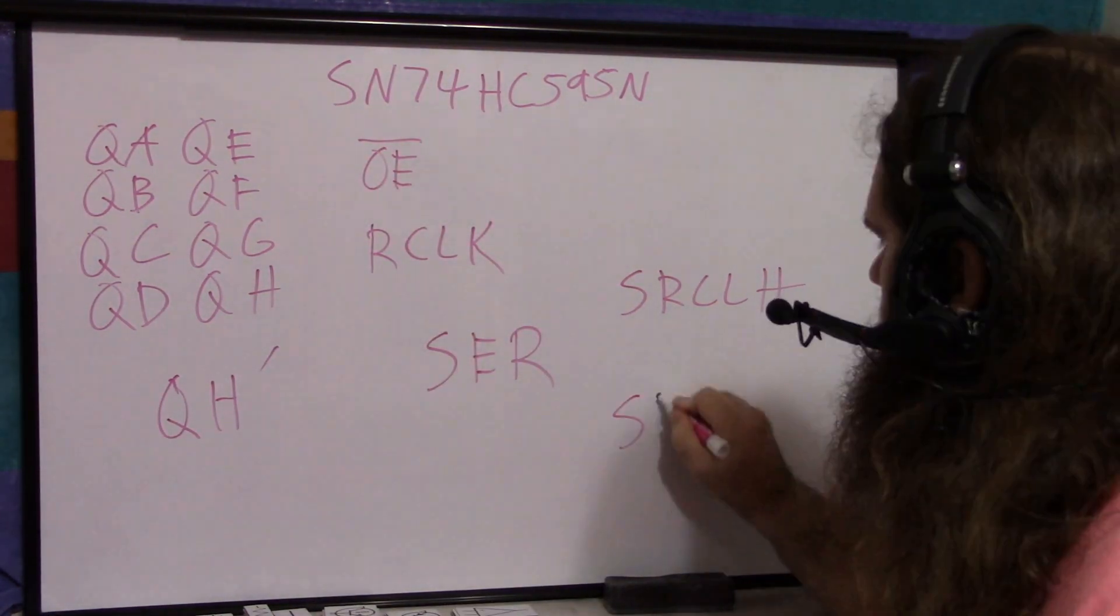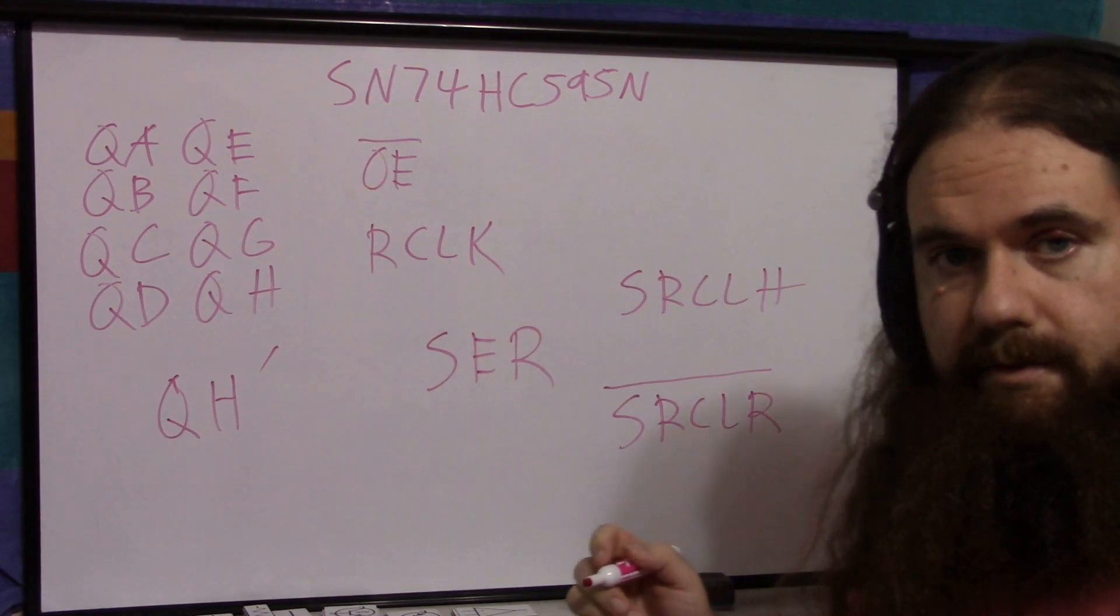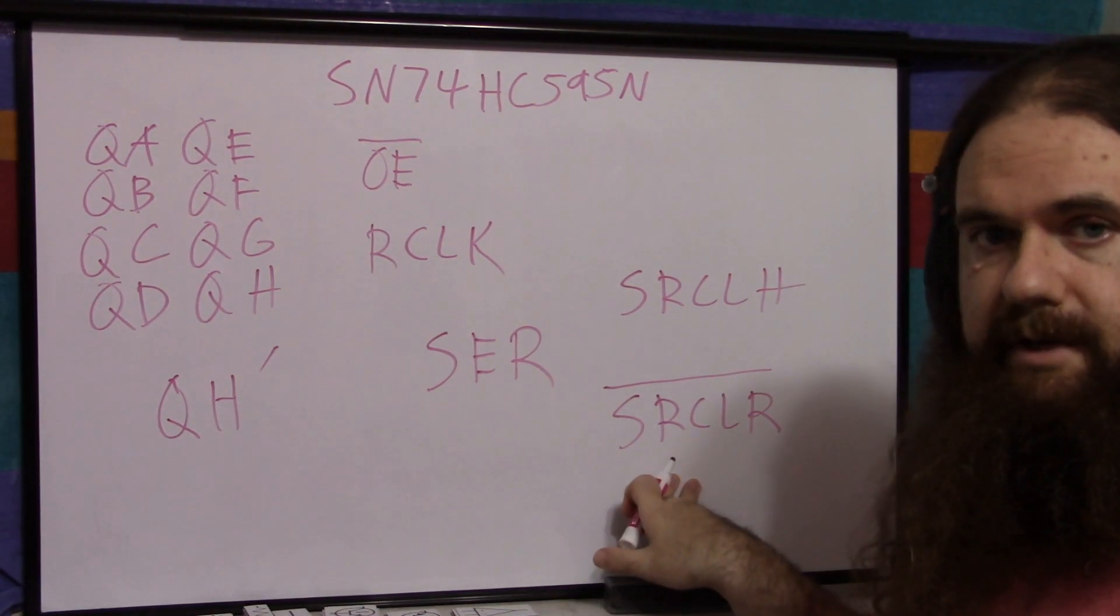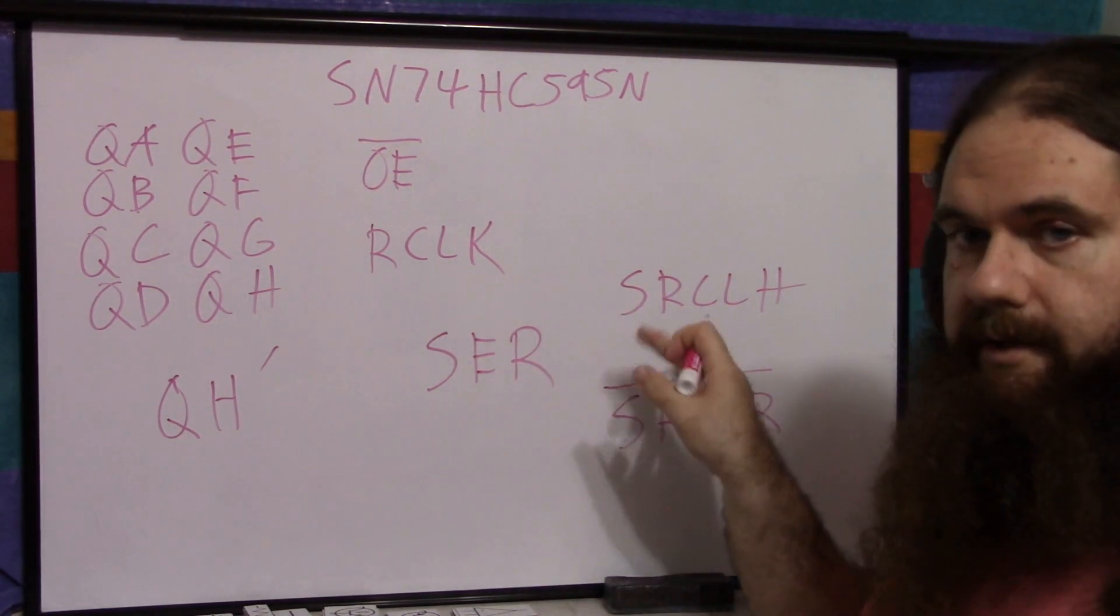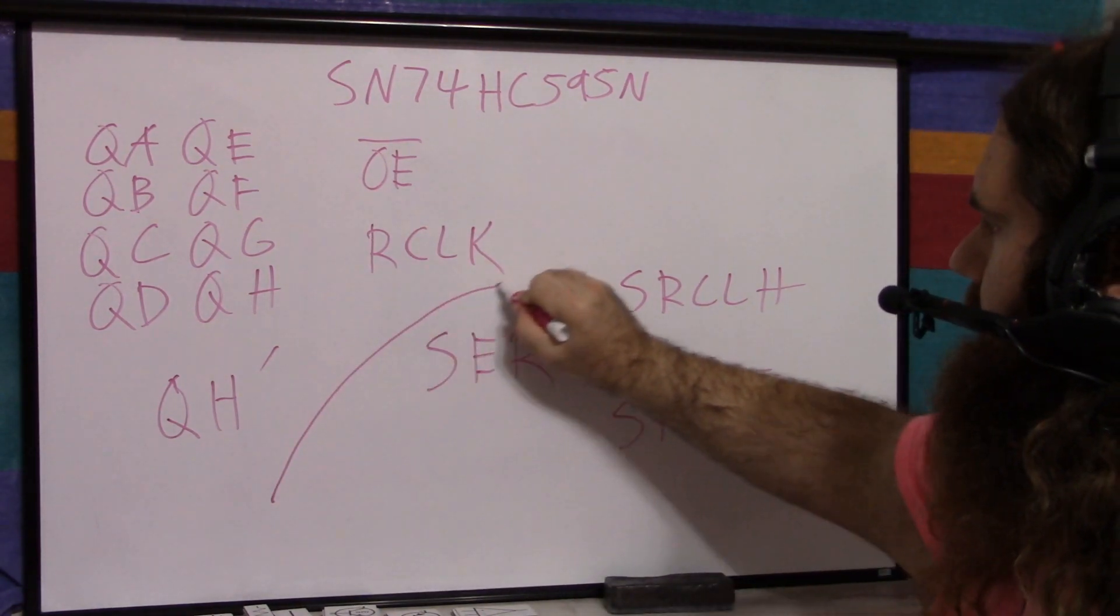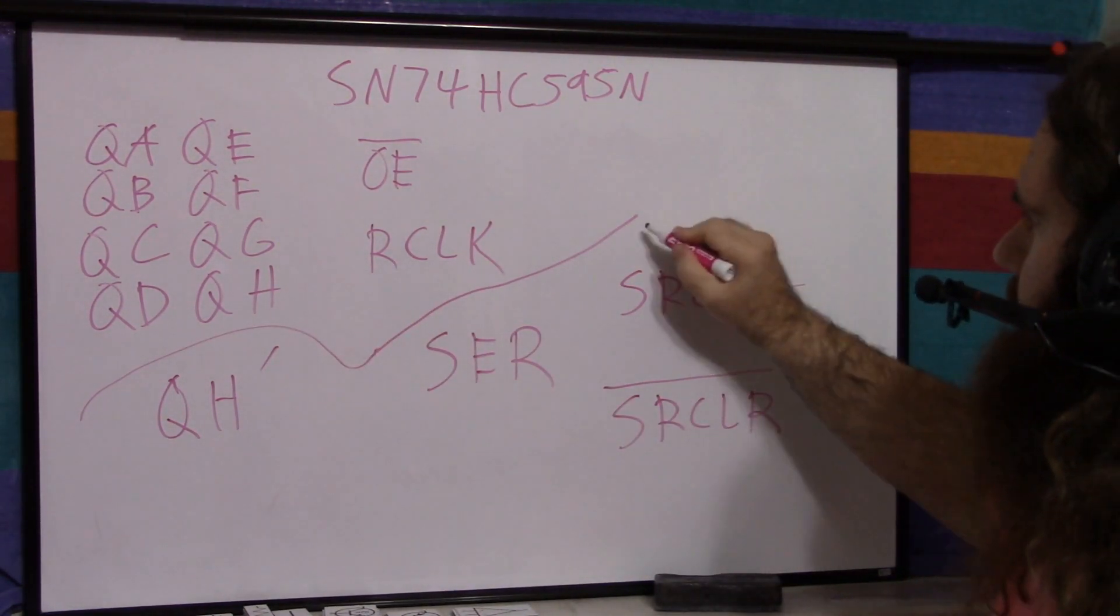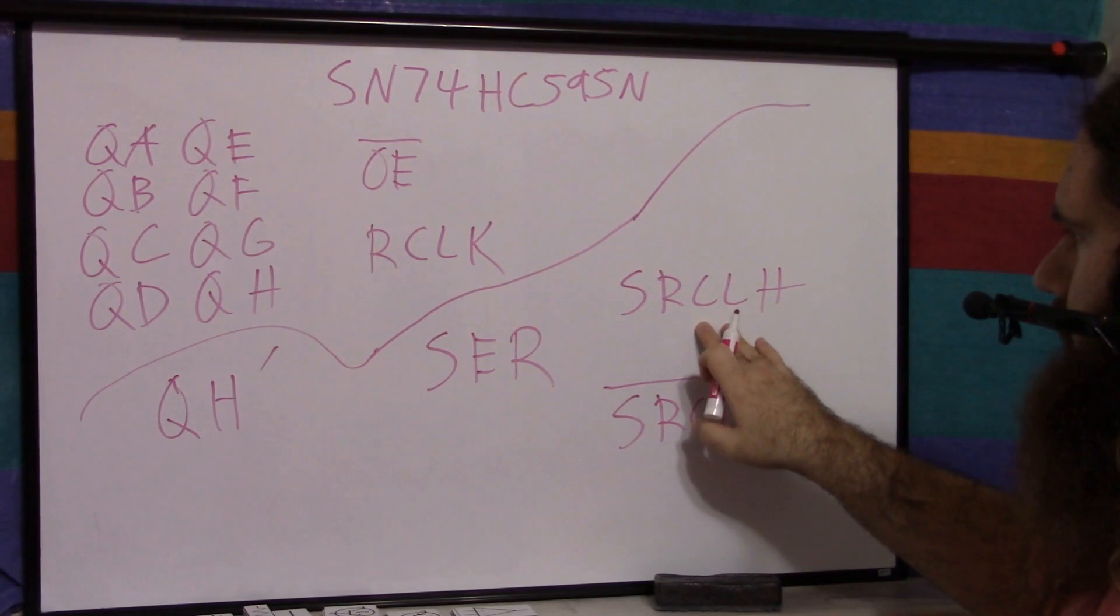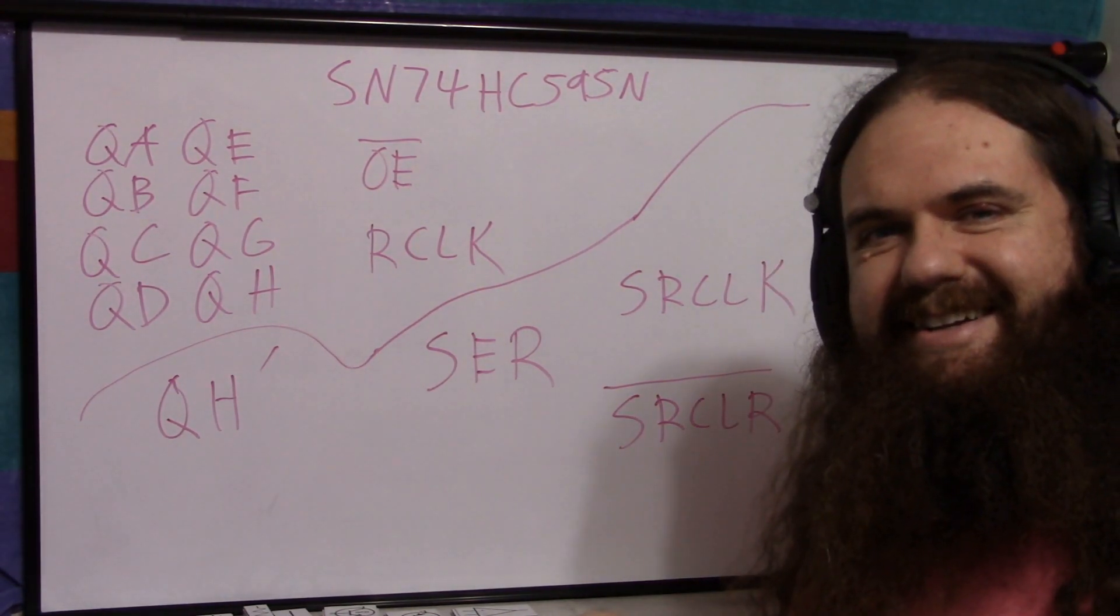And finally, there is a clear. SR clear, active low this time, and this is an asynchronous clear of the shifting, right? This is the shifting. Well, this is the shift register part. The serial input, the serial clock. Why did I write H? Okay, don't worry about it.